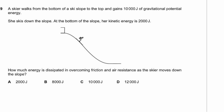Question 9. A skier gains 10,000 joules of gravitational potential energy at the top of a slope and has 2,000 joules of kinetic energy at the bottom. She is missing 8,000 joules, which has been lost to overcoming friction and air resistance. That gives us option B.